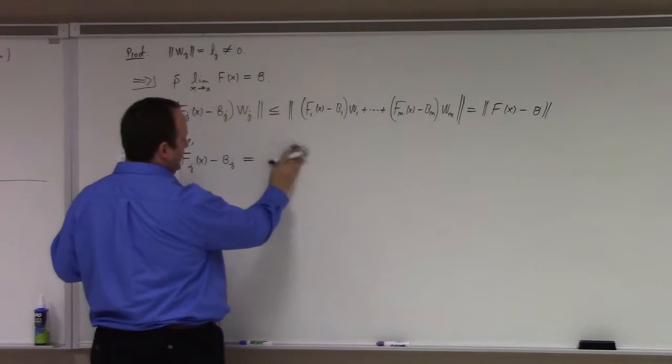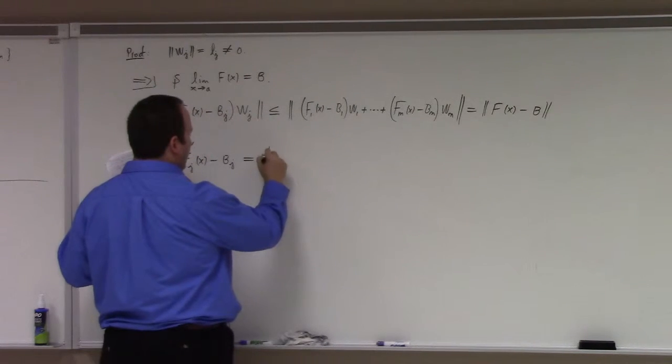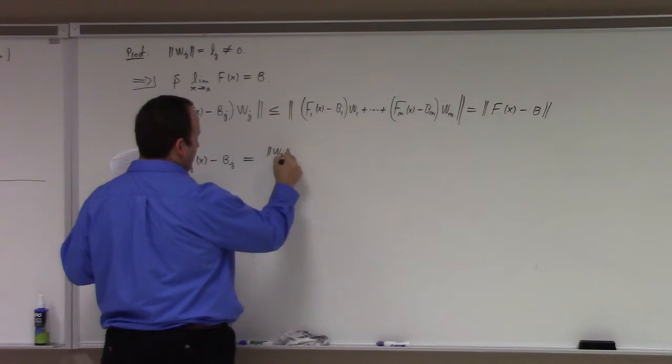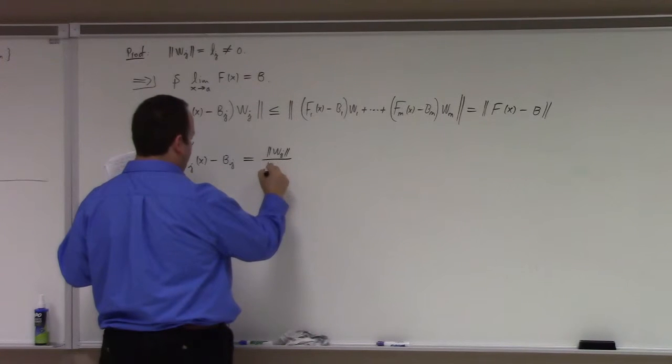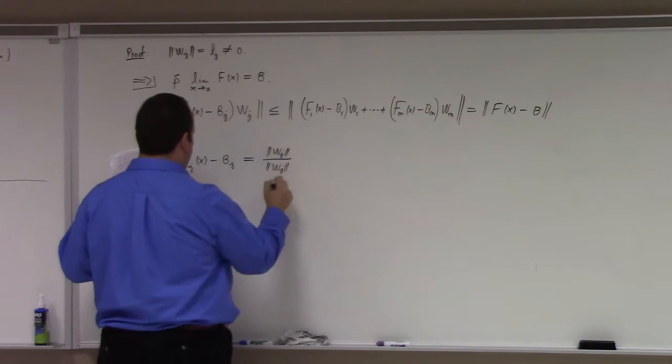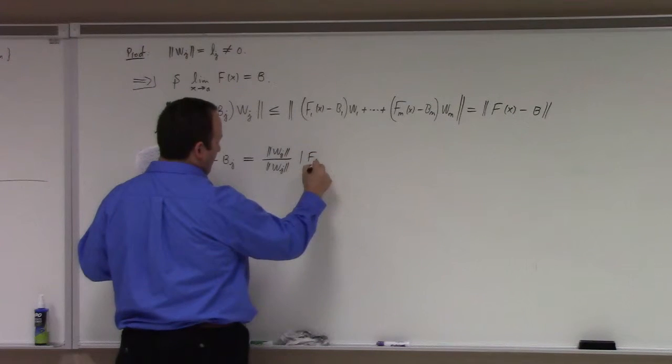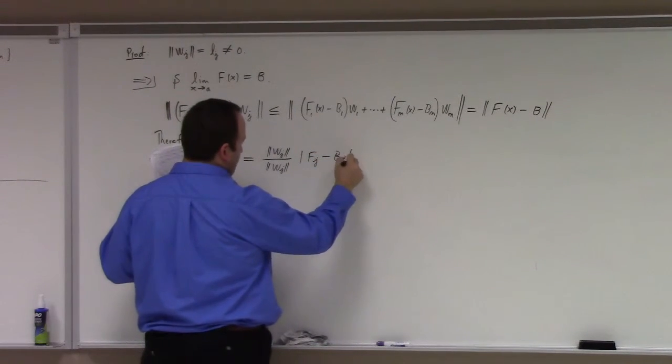Oh man, I had such high hopes for that being a great savings of writing, but I think it's a savings of writing, it's a loss of concept, so I'm going to write out the norm of w sub j, f sub value of f sub j, minus b sub j.